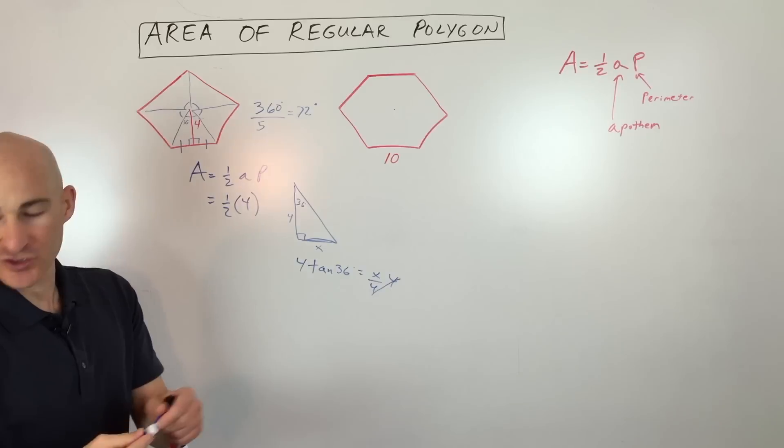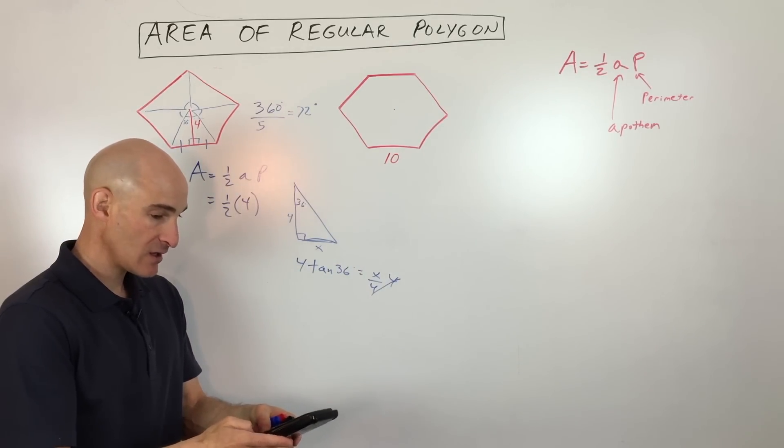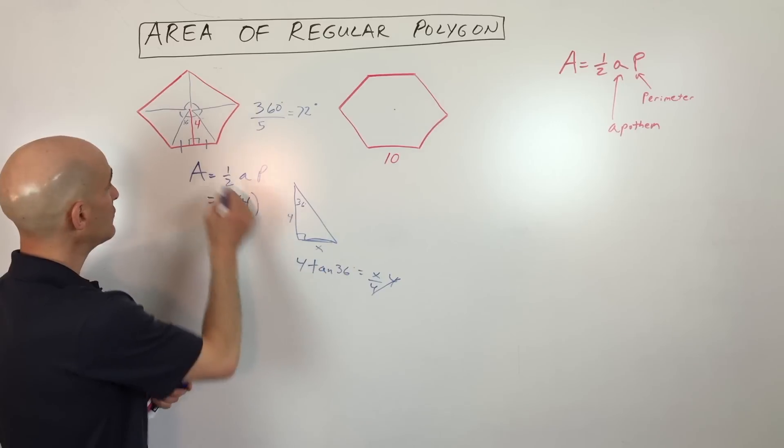So let's just go through the calculator and do that real quick. So the four times tangent of 36, four tan 36 comes out to about 2.9. So this is 2.9, which is right here.